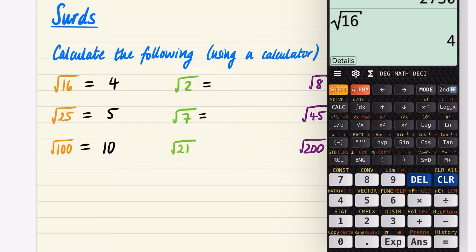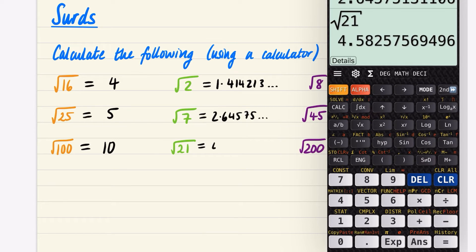Now when I do these ones on the calculator, I'll show you what I get. So I'm going to do the square root of 2, and you get this number that doesn't appear to have much of a pattern. You get 1.414213, and it just keeps going and going in a pattern that you can't really predict. I'm going to do root 7. We get 2.64575, and it just keeps going. And again, I'm going to try root 21 now on the next section, and that is 4.58257.